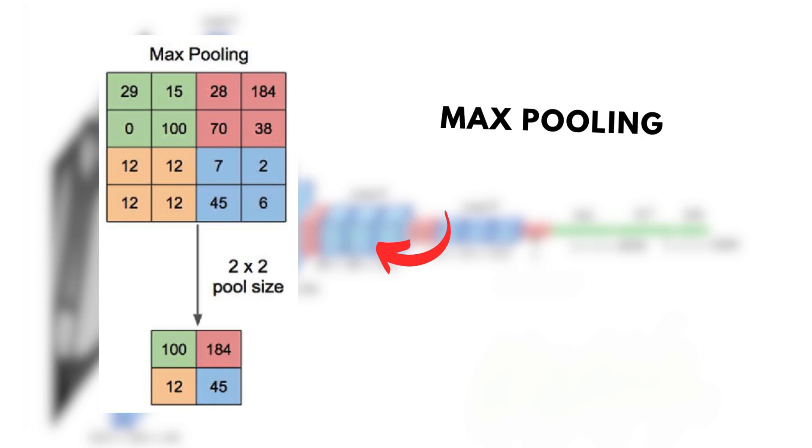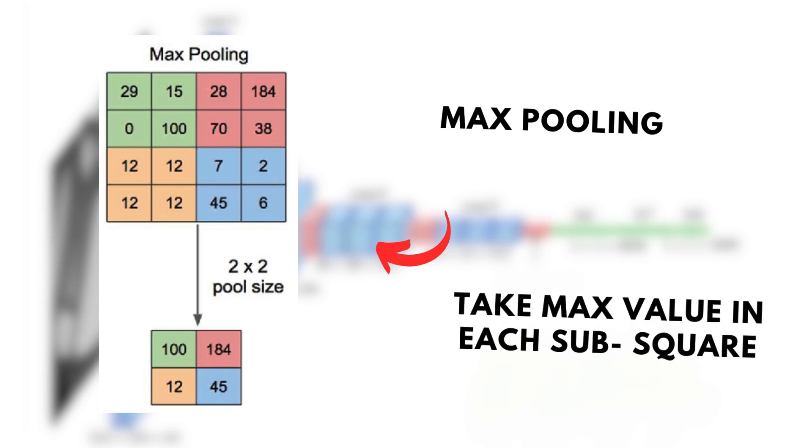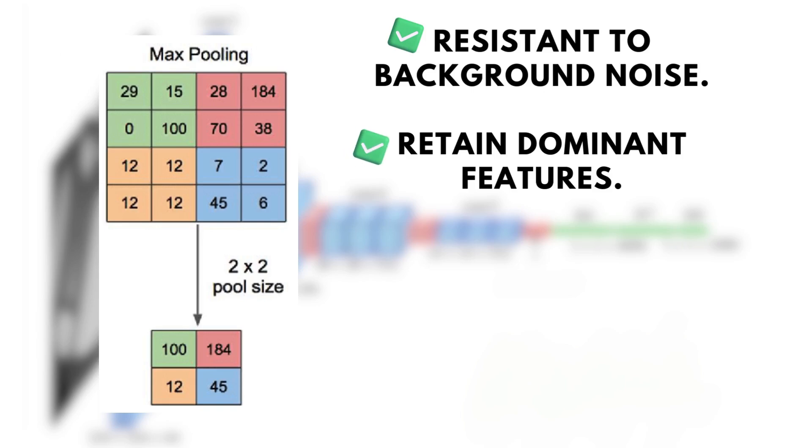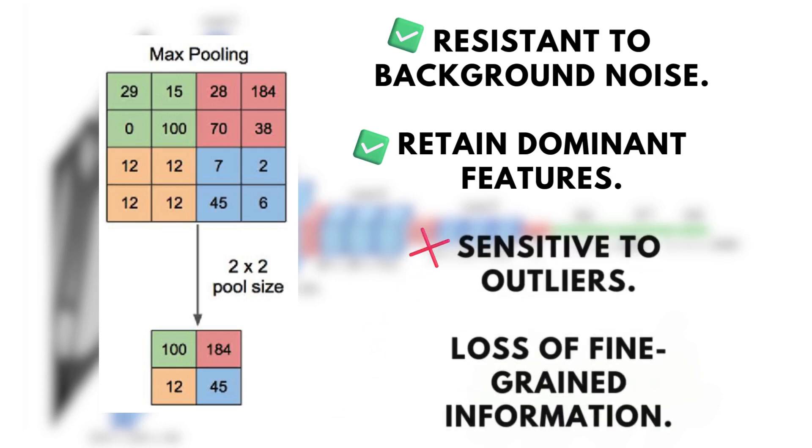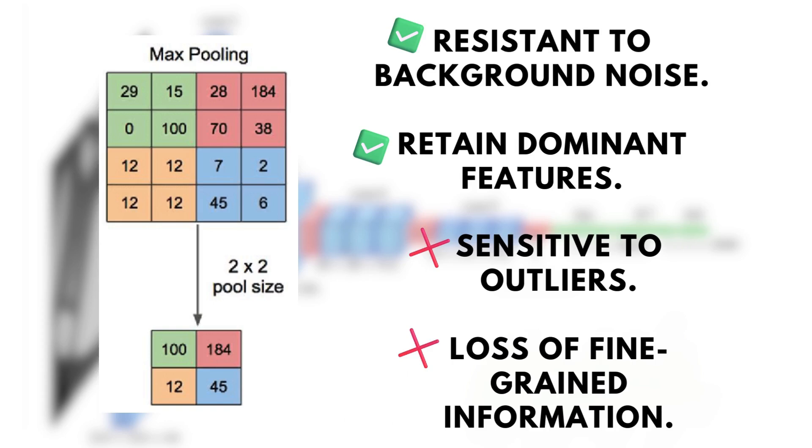One popular way to do this filtering operation is using max pooling. The operation is simple. In each 2x2 square, you take the maximum value and then you store it in the next layer. The main benefits of max pooling are that it is resistant to background noise and it retains the dominant features. Two important aspects for object detection. All benefits have their downside though. Max pooling is very sensitive to outliers and can lead to loss of fine-grained information.